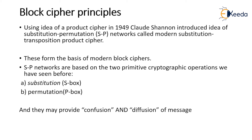Block cipher principles use the idea of the product cipher. In 1949, Claude Shannon introduced the idea of substitution-permutation networks, called modern substitution-transposition product ciphers. The working functionality of these ciphers depends on the substitution and permutation processes, which is why they are called product ciphers.